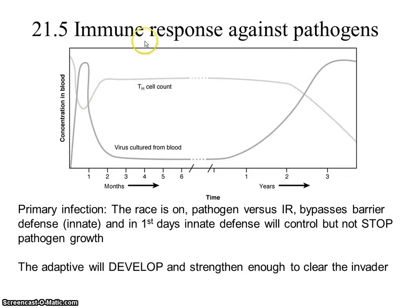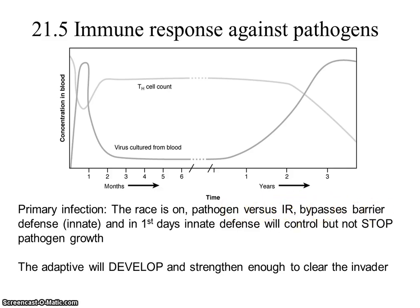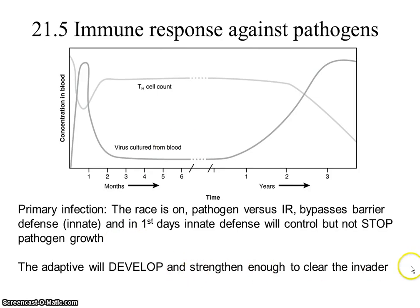Looking at our immune response against pathogens: in the primary infection, the race is on. The pathogen bypasses the barrier defense. In the first few days, innate defense will control but not stop the pathogen growth - that's why you get sick. But the adaptive immune response will develop and strengthen enough to clear the invader.